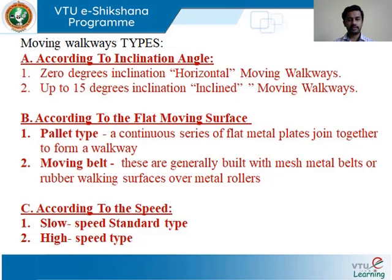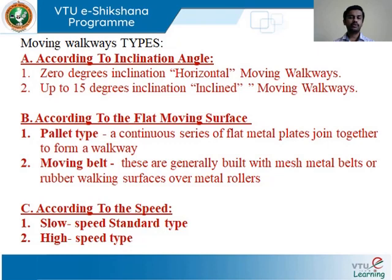There are three classification types for travelators. The first is according to inclination — from zero degrees up to a maximum of fifteen degrees. The second classification is according to the flat moving surface, meaning the platform where you step on: one is the pallet type and the second is the moving belt type. The third classification is according to speed, which can be slow or high depending on where the travelator is installed.